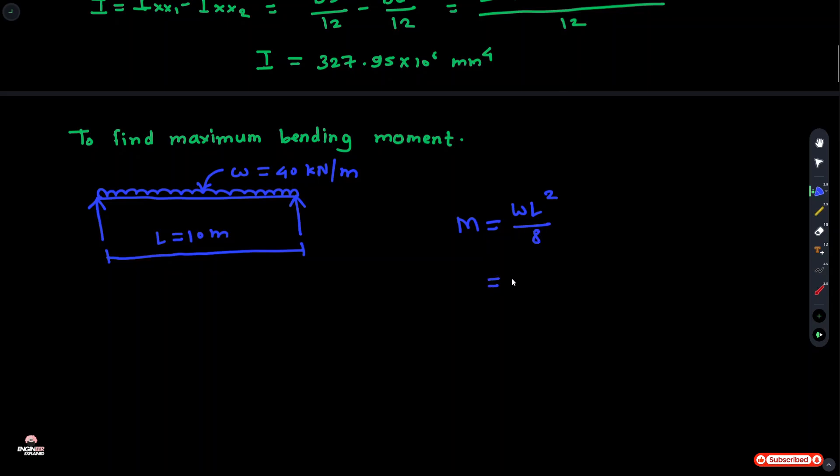Put the value in this formula. W value is 40 into L is 10 squared upon 8. Solve this and we get M equals 500 × 10⁶.